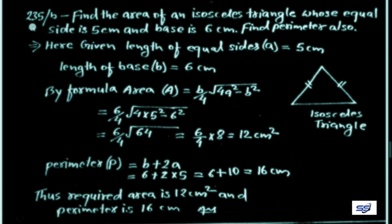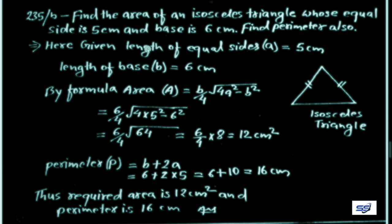Problem 235B: Find the area of an isosceles triangle whose equal sides are 5 cm and base is 6 cm. Also find the perimeter. An isosceles triangle has two equal sides. Here the equal sides are a = 5 cm each, and the base b = 6 cm.